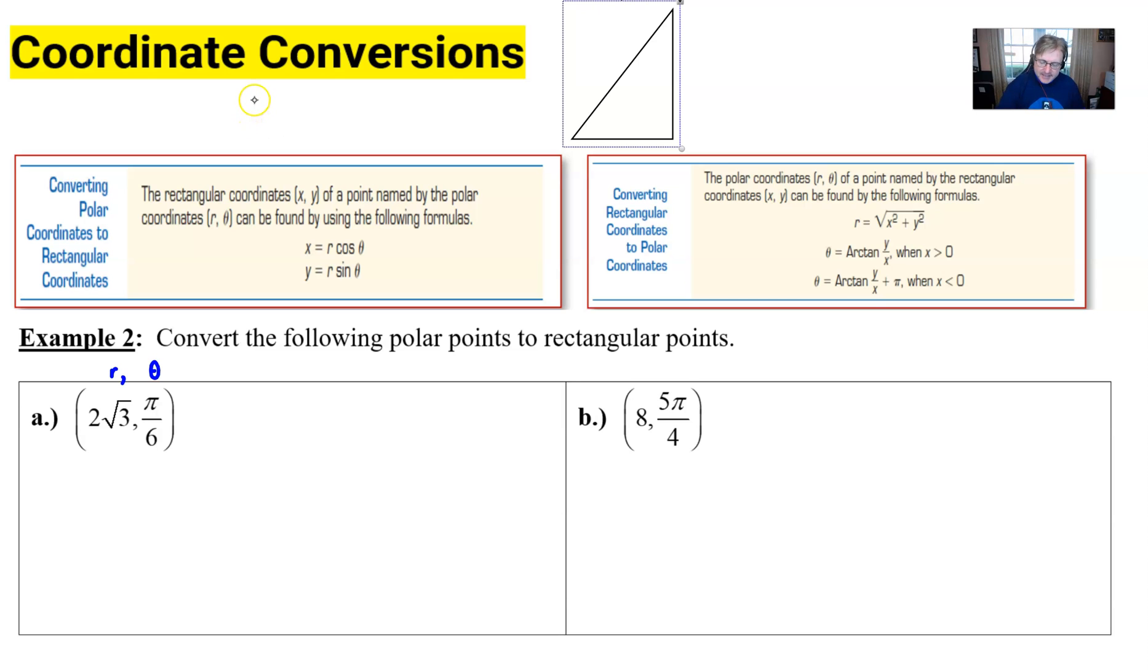And the first set of problems here, for example two, will only rely on the leftmost box, which is how to convert polar to rectangular, and that works both with points and equations. So what you see here is that the rectangular coordinates x, y that we're normally used to seeing for a point is named by the polar coordinate r theta if we use these following formulas. And it's not probably out of the question that you've seen these before, maybe in your trig class or maybe even at the tail end of your geometry course.